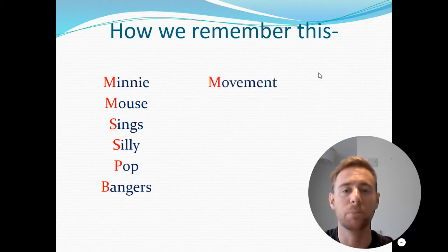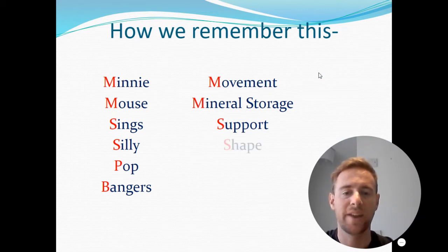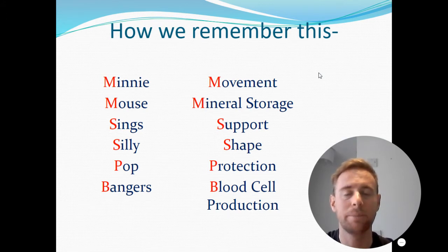Make sure you're writing these down as we go through. Firstly we have movement. Secondly we have mineral storage. Thirdly is support. We then have shape, protection, and blood cell production. Those are our six functions of the skeleton. Now I'm going to go through in a little bit more detail what they are and how they support our body.